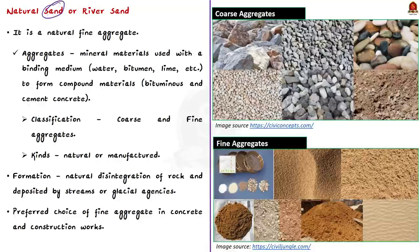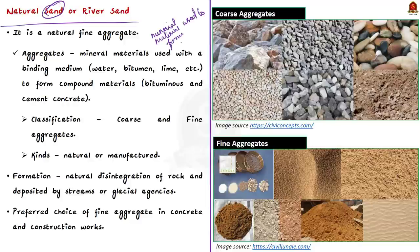M-Sand is a type of sand. Sand is an aggregate — that is, a mineral material used with a binding medium such as water, bitumen, or lime to form compound materials such as bituminous concrete and cement concrete. Aggregates include sand, gravel, and crushed stones. They are classified into coarse aggregates and fine aggregates, and can be natural or manufactured.